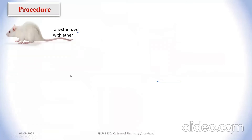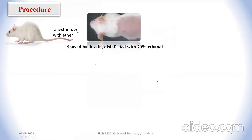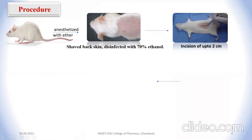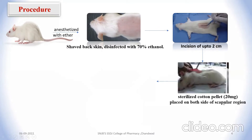Now for the procedure: use a male albino rat weighing 230 to 250 grams. Anesthetize the rat, then shave the back skin and disinfect it with 70% ethanol. With a sharp knife, make an incision of up to 2 cm on the rat. Once the incision is made, use a forcep to create a subcutaneous pocket on the scapular region.